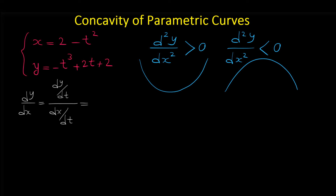dy/dt, which means the derivative of y, is negative 3t² plus 2. And the derivative of x is negative 2t — the derivative of 2 is 0 and the derivative of negative t² is negative 2t.